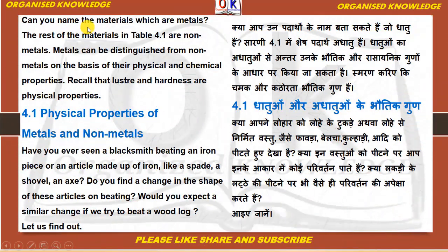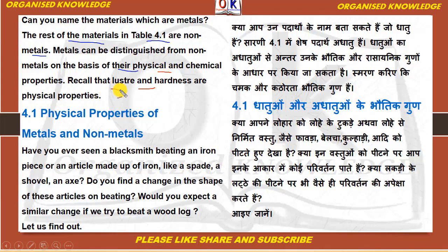Can you name the materials which are metals? The rest of the materials in Table 4.1 are non-metals. Yaani aap un padartho ke naam bata sakti hain jo dhatu hain, aur Saarni 4.1 mein shesh jo padarth hain woh adhatu hain. Agar aap Table 4.1 dekho ke us mein loha, tamba — woh kya the? Woh dhatu hain. Dhatu aur adhatu mein antar unke bhotik aur rasaynik gunon ke aadhar par kiya ja sakta hai. Metals can be distinguished from non-metals on the basis of their physical and chemical properties. Recall that luster and hardness are physical properties — unki chamak, unki kathorata, yoh unki physical properties hain.